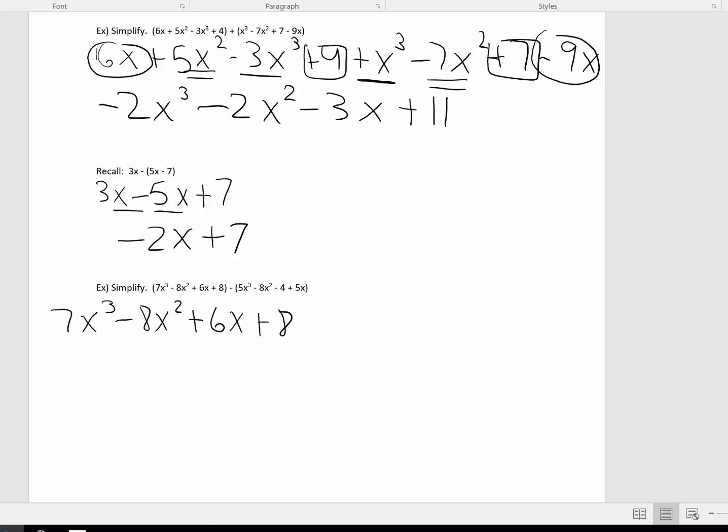And now I'm going to distribute minus 5x cubed plus 8x squared plus 4 and minus 5x. So now I'm going to combine like terms and write this in descending order.